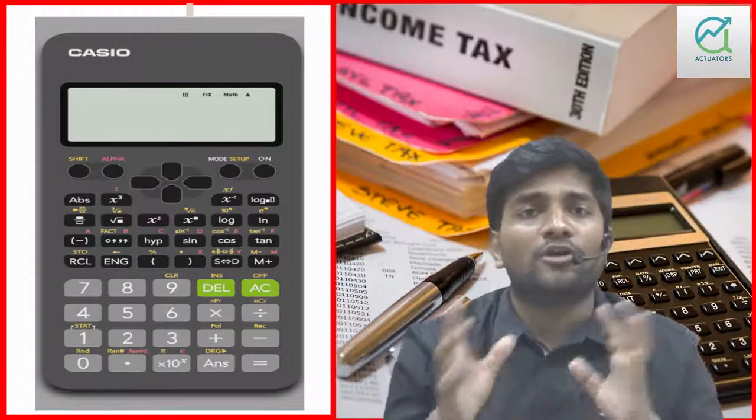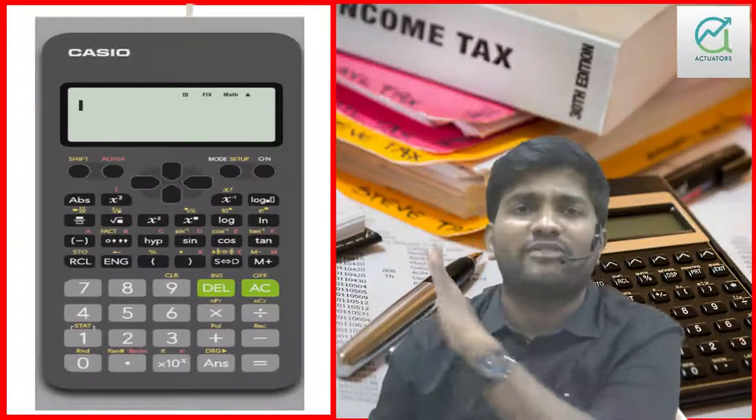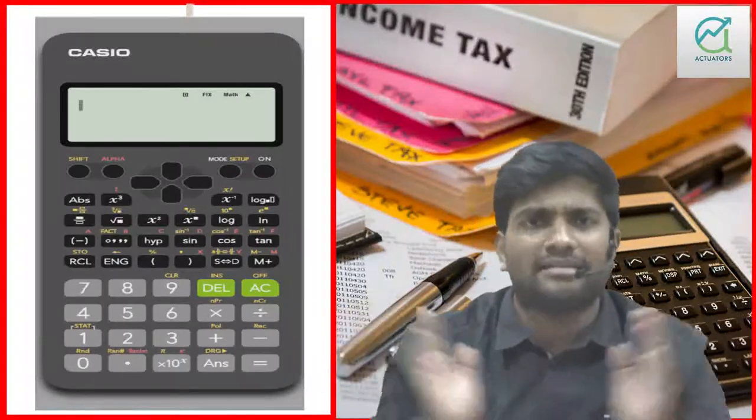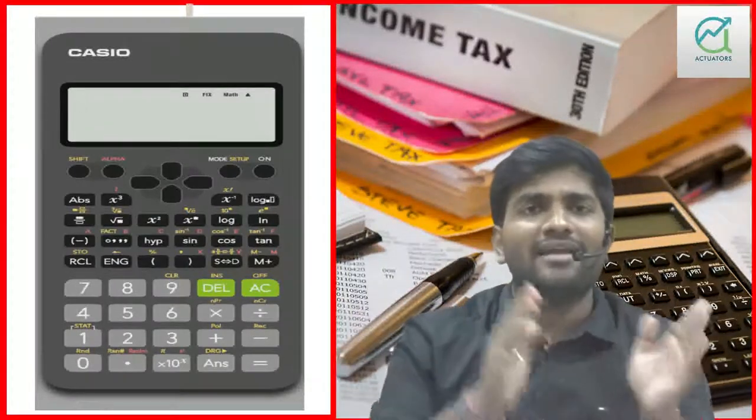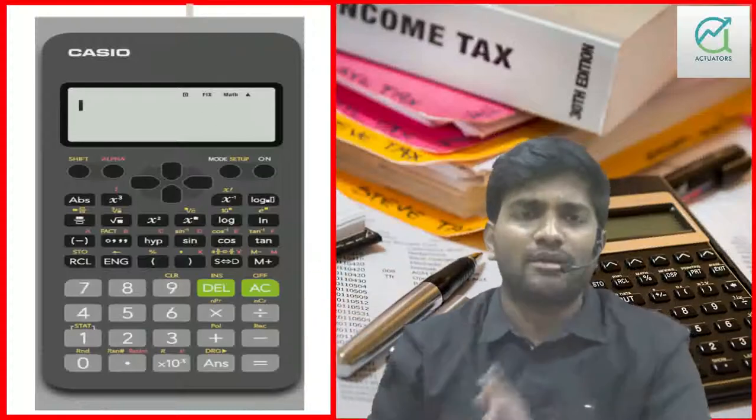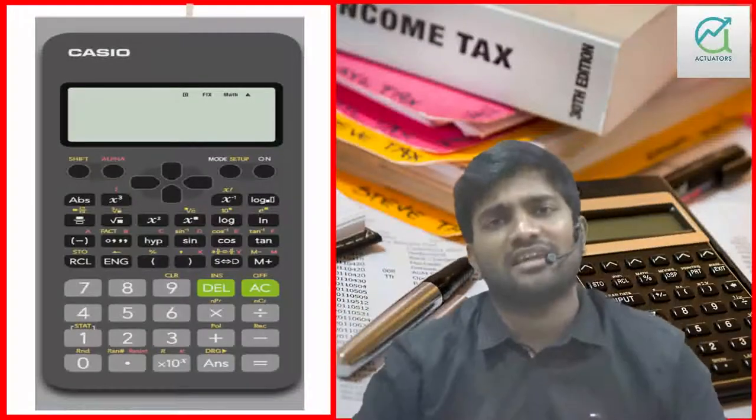First of all, I will give you some raw data: 10, 20, 30, 40, 50. That's a simple dataset. This is my sample — 10, 20, 30, 40, 50 — and I will give you the mean and standard deviation for it.